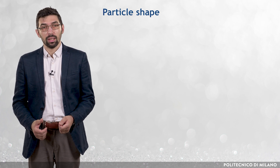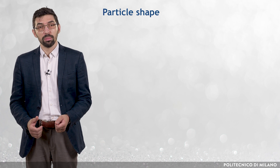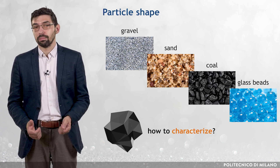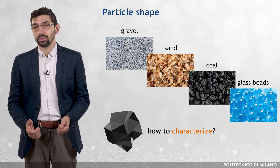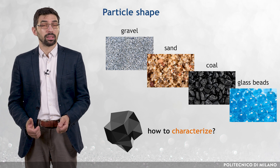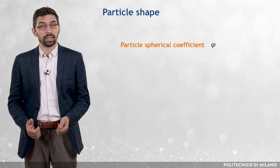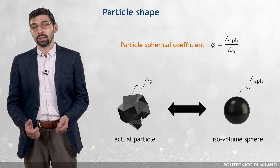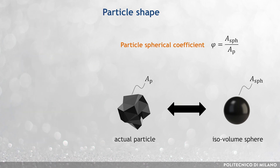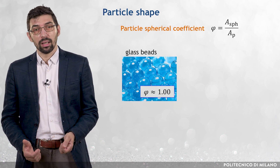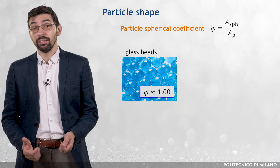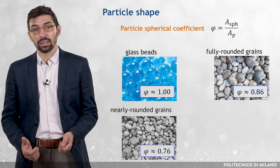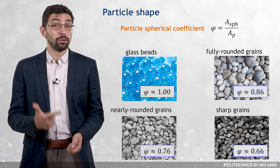Another important feature of the dispersed phase, which strongly affects its fluid dynamic behavior, is the shape of the particles. The shape is very difficult to characterize, primarily because it is difficult to quantify by a number, and additionally because it is virtually different for all particles. Several indexes have been proposed to provide a rough indication of particle shape. One of the most widely used is the particle sphericity coefficient, called φ, that is, the ratio between the surface area of a sphere having the same volume as the considered particle and the actual surface area of the particle. The sphericity of a spherical particle equals 1, a value which may be reasonable for artificial glass beads. For natural materials, typical values are 0.86, 0.76, and 0.66 for fully rounded, nearly rounded, and sharp grains, respectively.